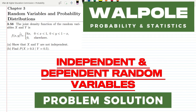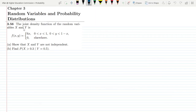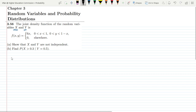Hello guys, this is question 3.56. The statement: the joint density function of random variables X and Y is f(x,y) = 6 for x greater than 0 and less than 1, and y greater than 0 and less than 1 minus x, and 0 elsewhere. Part (a) asks us to show that X and Y are not independent. First we have to see the condition for independence.